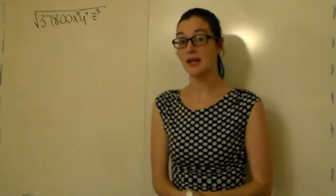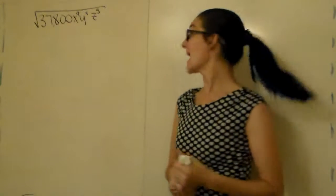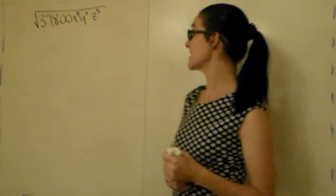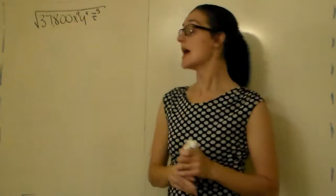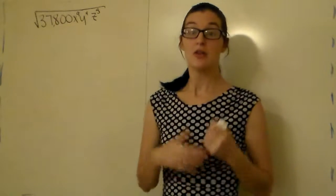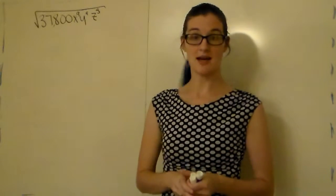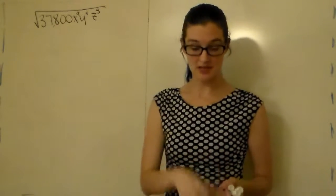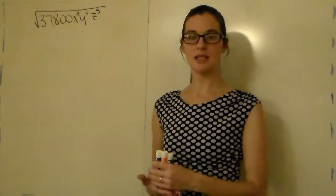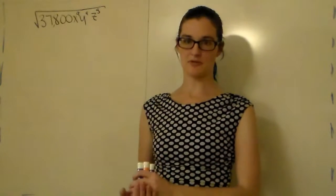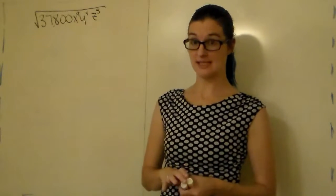We're going to talk about how to simplify a radical expression today. We have a radical — it's a square root of 37,800 x to the ninth, y to the fourth, z to the fifth. Anytime you have a radical, your teacher is most likely going to want it in simplified form and not as a decimal. If it comes out to a decimal in your calculator, it tells you it doesn't come out evenly and it needs to be simplified.